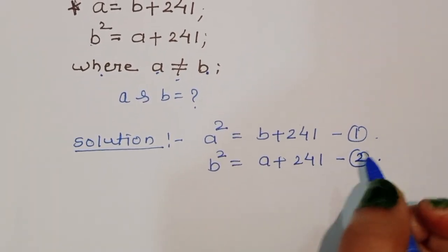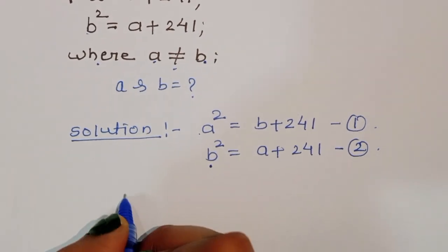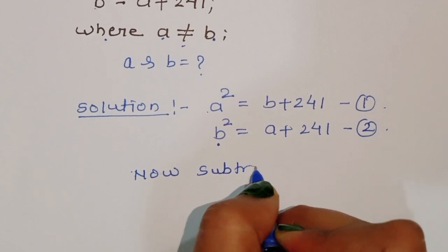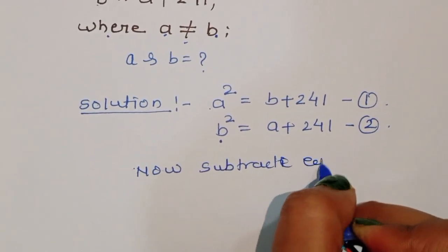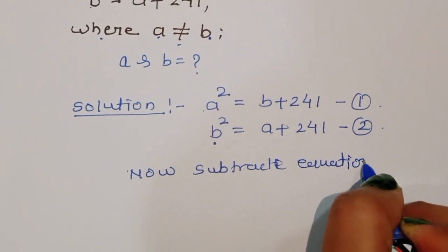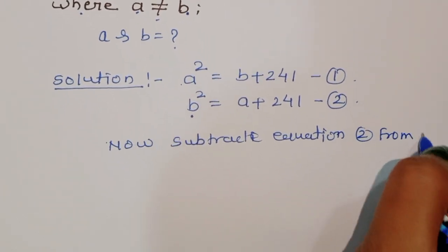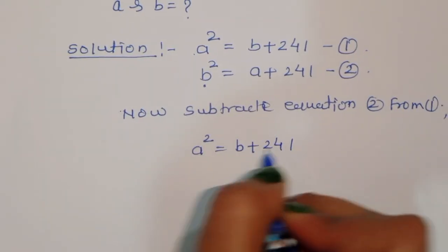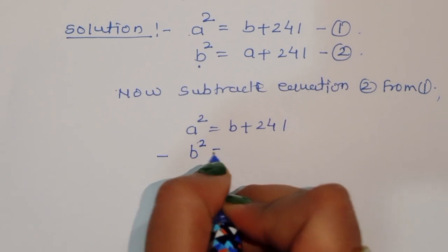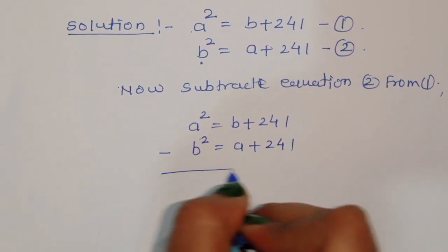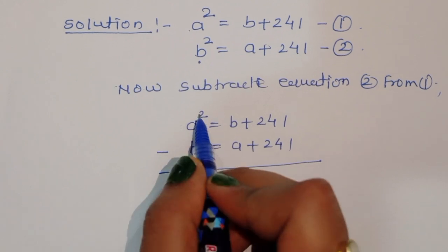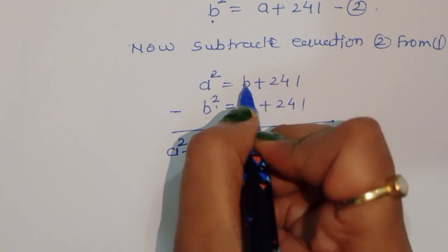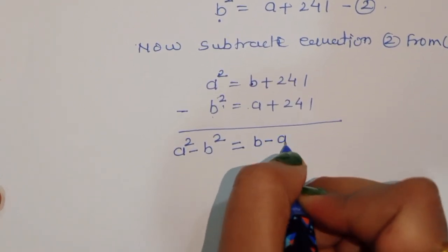Now we subtract equation 2 from equation 1. We write A squared equals B plus 241, minus B squared equals A plus 241. Subtracting gives us A squared minus B squared equals B minus A.